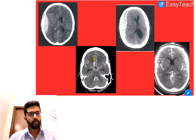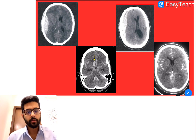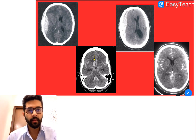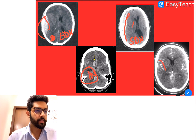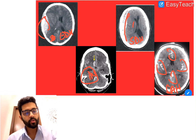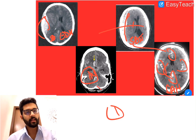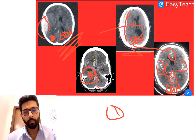Before we close, here are all four CT types shown together. EDH shows a lenticular-shaped bleed, SDH shows a crescent-shaped bleed, intraparenchymal or intracerebral hemorrhage shows a bleed within the parenchyma, and SAH shows the typical hyperdense subarachnoid pattern. If you can differentiate these on CT, you will definitely get at least one question from this topic in the exam — most likely on EDH or SDH. Thank you, hope it was good.